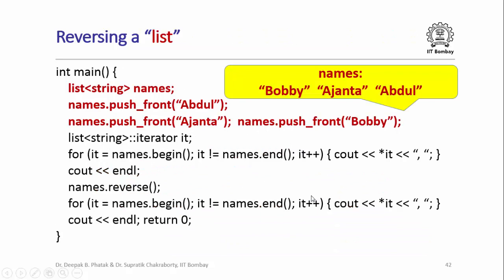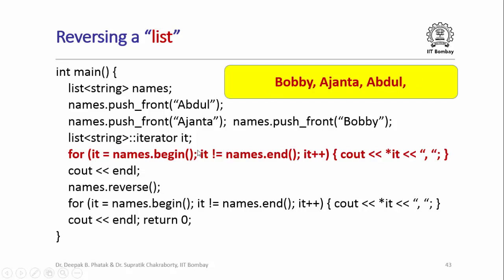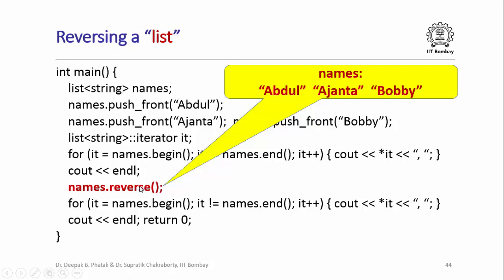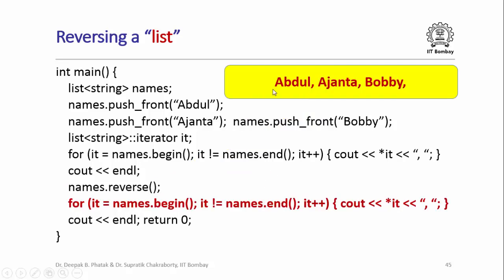The list class also provides a member function for reversing a list directly. The code creates the list Bobby, Ajanta, Abdul, which printing with a forward iterator gives Bobby, Ajanta, Abdul. Then calling names.reverse() reverses the order of elements — whatever was at the back comes to the front and vice versa. So the list becomes Abdul, Ajanta, Bobby. Now printing with the forward iterator gives: Abdul, Ajanta, Bobby.